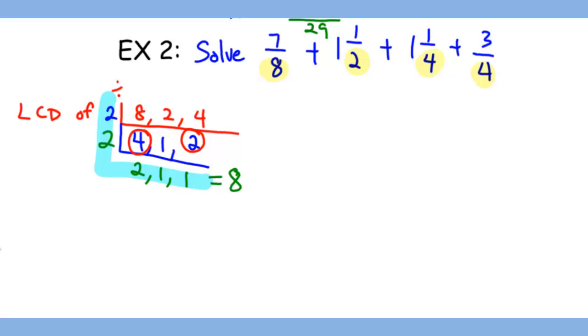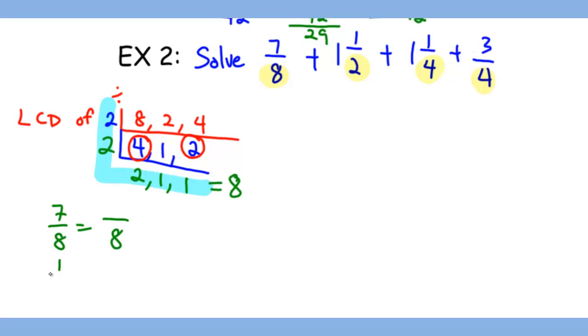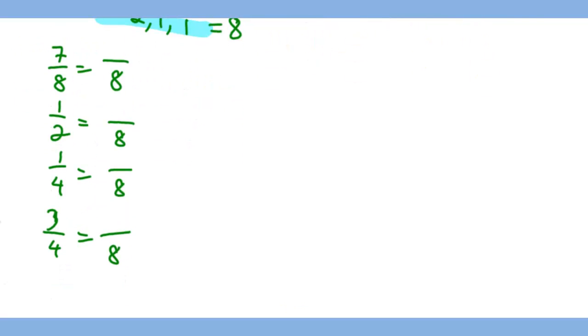So the next job we have is to convert each fraction into a common denominator. For 7/8 it will be the exact same thing. For 1/2 it will be 4/8. For 1/4 you times it by 2.